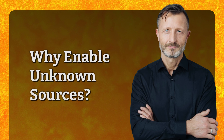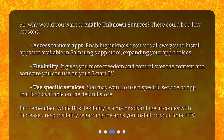Why enable Unknown Sources? So, why would you want to enable Unknown Sources? There could be a few reasons. Access to more apps: enabling Unknown Sources allows you to install apps not available in Samsung's App Store, expanding your app choices. Flexibility: it gives you more freedom and control over the content and software you can use on your Smart TV. Use specific services: you may want to use a specific service or app that isn't available on the default store. But remember, while this flexibility is a major advantage, it comes with increased responsibility regarding the apps you install on your Smart TV.